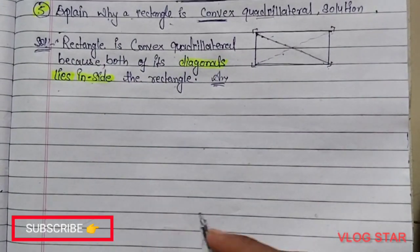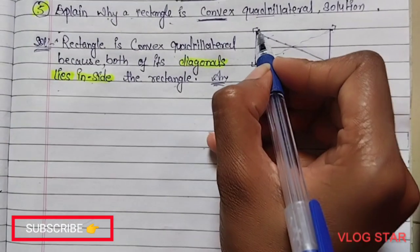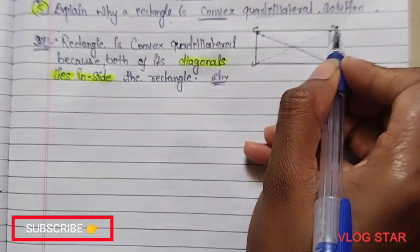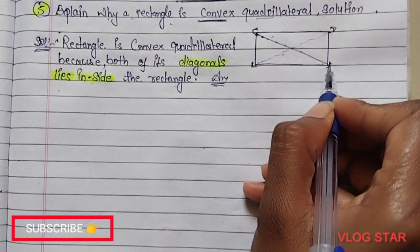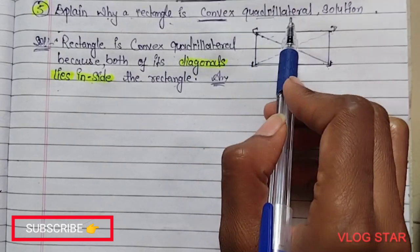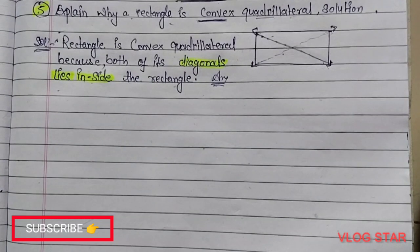And if you want to write another answer, you can write the vertices of the rectangle are pointing outside, so it is a convex quadrilateral. So here the fifth number question has been finished. If you have any doubt regarding any question, comment in the comment box. Like the video, share with your friends, and subscribe. Thank you.